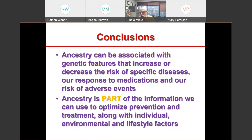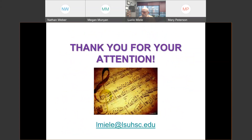In conclusion, ancestry can be associated with genetic features that increase or decrease our risk of specific diseases, our response to medications, and our risk of adverse events. Ancestry is a piece of the puzzle — part of the information we can use to optimize prevention and treatment, along with individual environmental and lifestyle factors. Thank you for your attention, and I'm happy to take any questions.